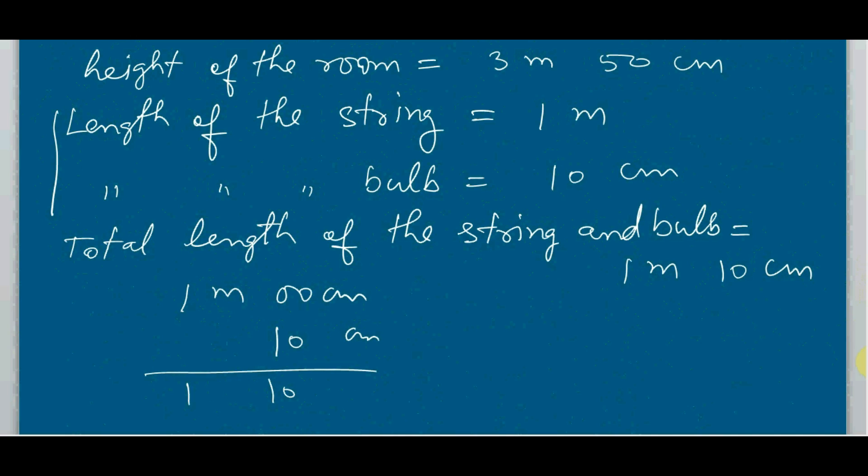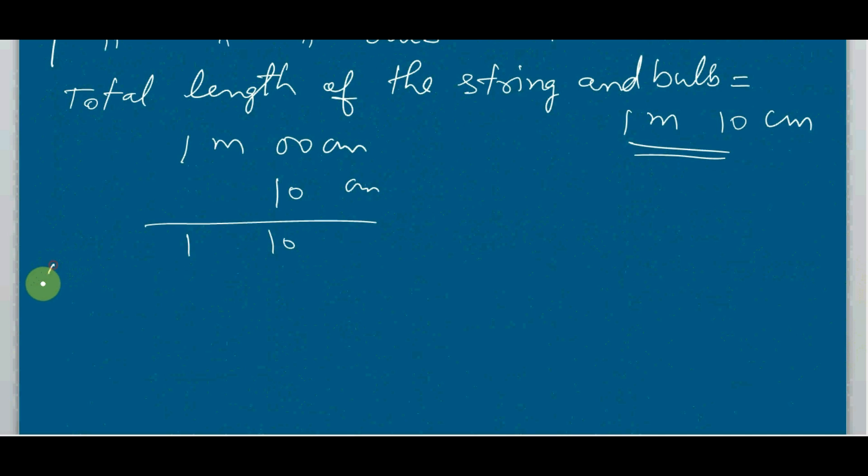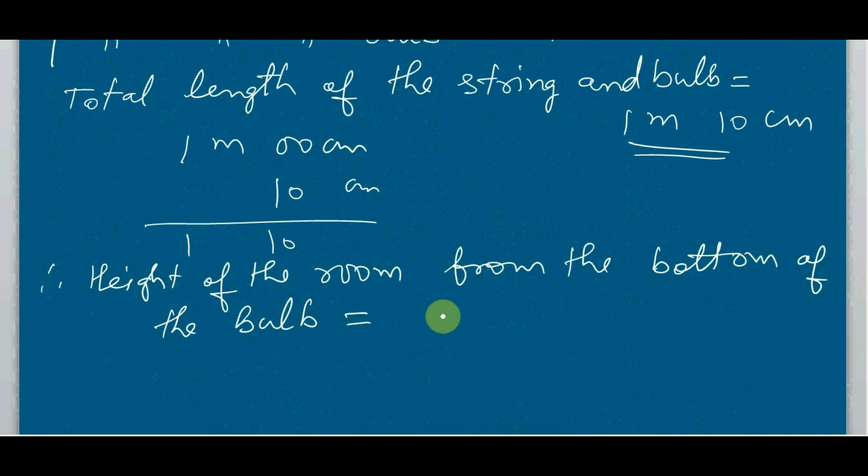Now you have to find out the height of the room from the bottom of the bulb, so you need to subtract this one from this one. So you write finally statement like this: therefore, meter centimeter - 3 meters 50 centimeters minus 1 meter 10 centimeters. You have to subtract this one. What you get? You will get 2 and 40, that means 2 meters and 40 centimeters. And this is your answer.